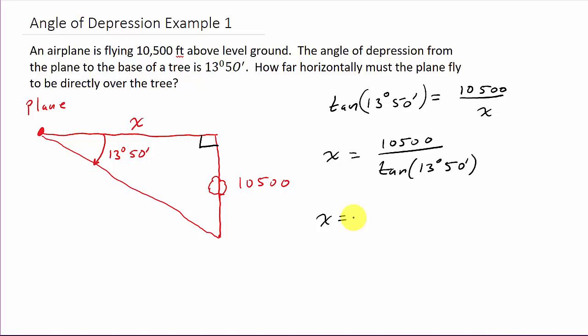Alright, so we've got 10,500 divided by tangent. Now, the 13 degrees 50 minutes, some calculators let you put in degrees, minutes, and seconds. And if you know how to do that, that's fine. I'm going to talk you through this. So to put in the 13 degrees 50 minutes, we'll put 13.